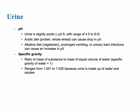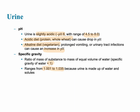Urine should be slightly acidic, with a pH of around 6, ranging between 4.5 and 8, but this can vary with diet. A very acidic diet high in proteins and whole wheats can lower the pH, while an alkaline or vegetarian diet can increase it. The specific gravity of urine is the ratio of the mass of urine to the mass of an equal volume of water; it should be slightly above 1 due to the solutes present in urine.